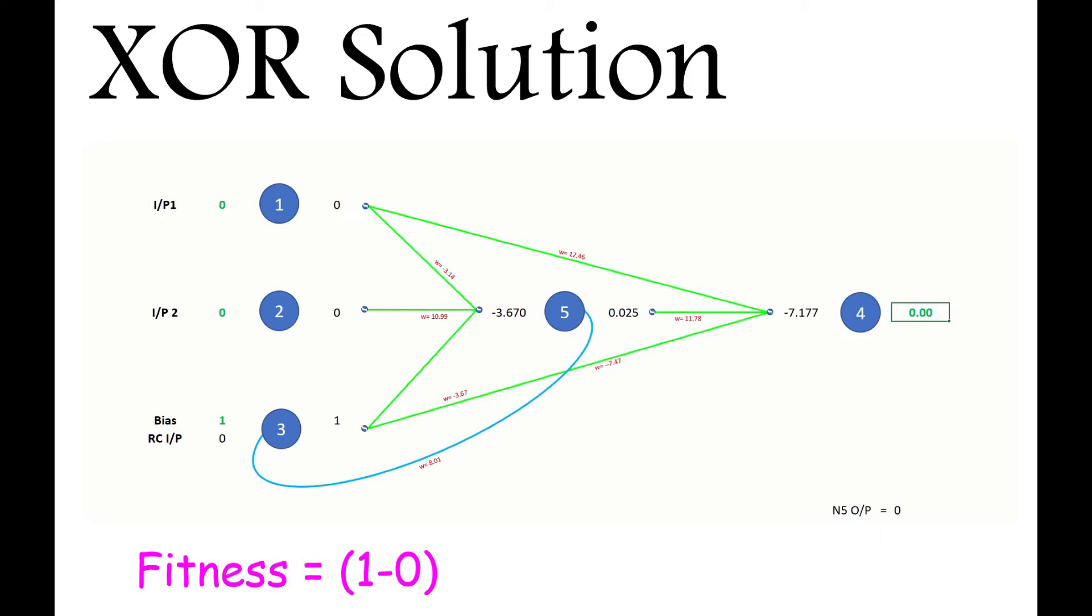Now though, the output from node 5 is 0.025, and will play a part in determining the network output from the next set of inputs. This only happens when recurrent connections are present, as without them, the signals only flow from left to right through the layers.